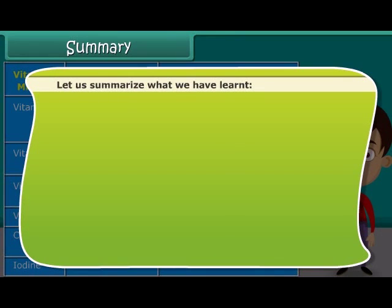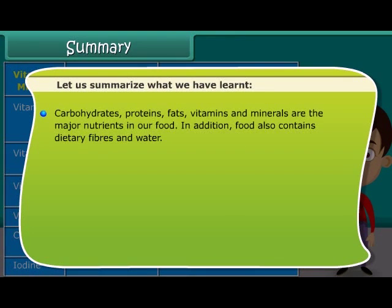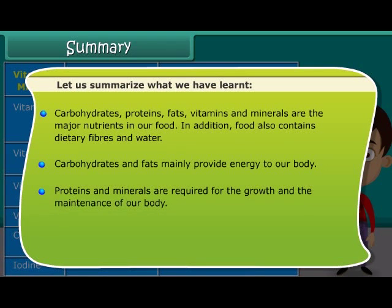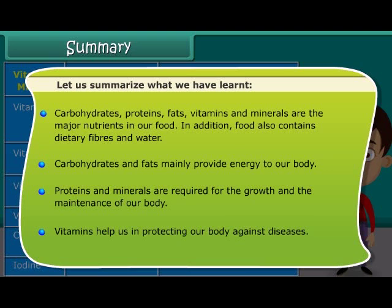Let us summarize what we have learned. Carbohydrates, proteins, fats, vitamins and minerals are the major nutrients in our food. In addition, food also contains dietary fibers and water. Carbohydrates and fats mainly provide energy to our body. Proteins and minerals are required for the growth and maintenance of our body. Vitamins help us in protecting our body against diseases.